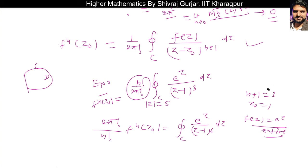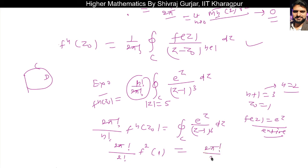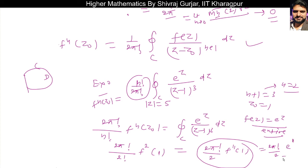So the integral equals 2pi*i divided by n factorial times f^(n)(z-naught). Here n is 2 and z-naught is 1. So this is 2pi*i divided by 2 factorial, times f''(1). Since f(z) = e^z, differentiating any number of times gives e^z. So f''(1) = e^1 = e. Therefore the answer is 2pi*i divided by 2 times e, which equals pi*e*i. So our answer is pi*e*i.